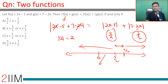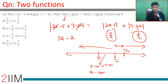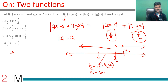For x < 5/2, say x = 2: |2(2) - 5| = |-1| = 1, so here |2x - 5| = 5 - 2x. Plus |7 - 2x|, which stays as 7 - 2x when x < 5/2. So the sum is (5 - 2x) + (7 - 2x) = 12 - 4x. I'm breaking this into three ranges; for x ≤ 5/2 the expression is 12 - 4x.